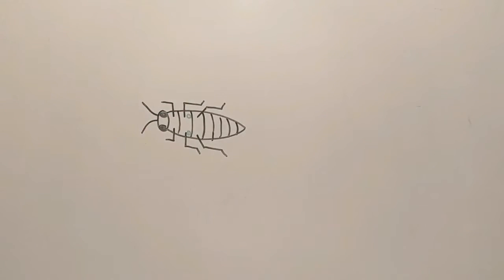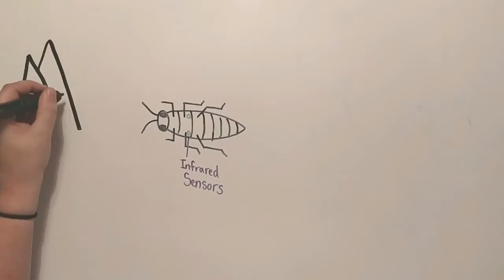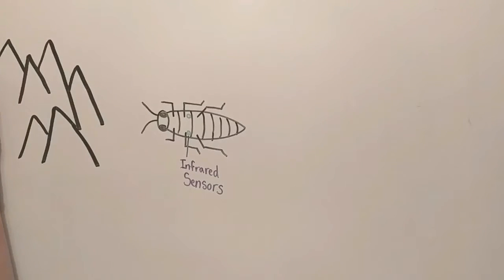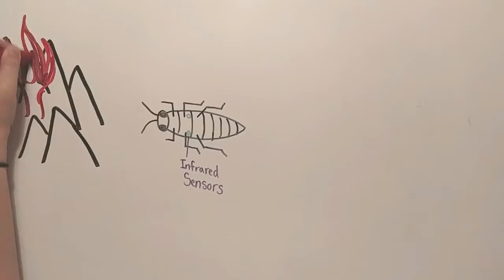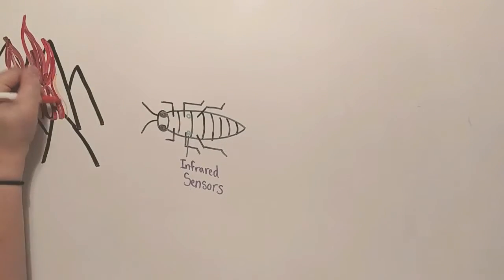On the underside of the beetle, between the second and third pair of legs, they have an infrared sensing organ. In a mountainous region with a 31 mile forest fire, these beetles can sense infrared from three miles away.